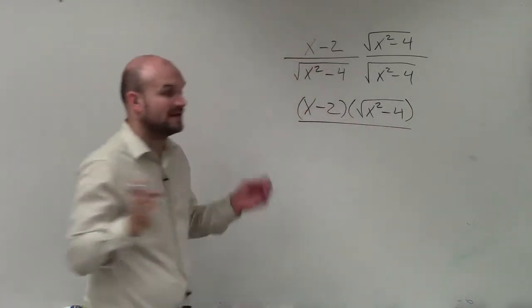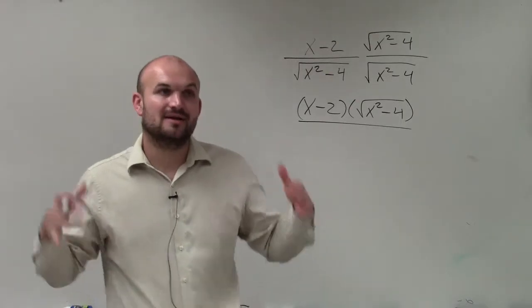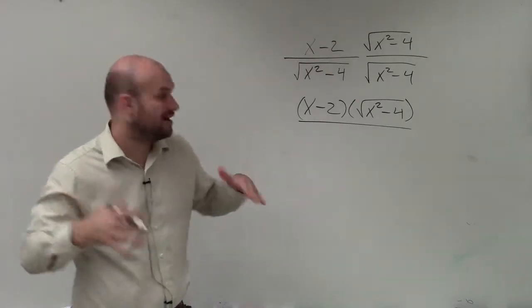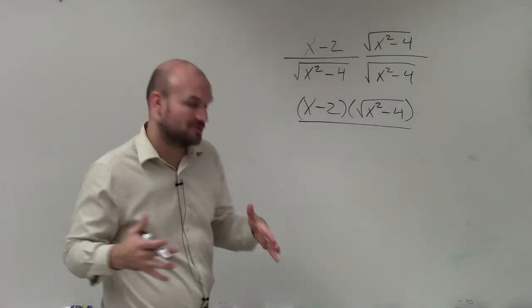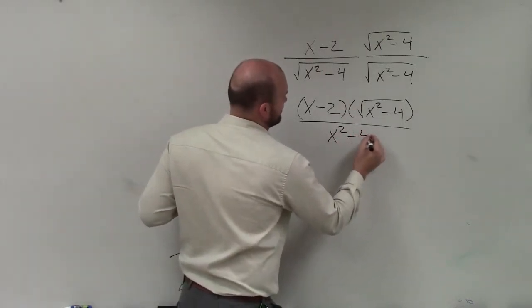x squared minus 4 times x squared minus 4 is x squared minus 4 squared, the square root—I'm sorry, the square root of x squared minus 4 squared. So that just becomes x squared minus 4.